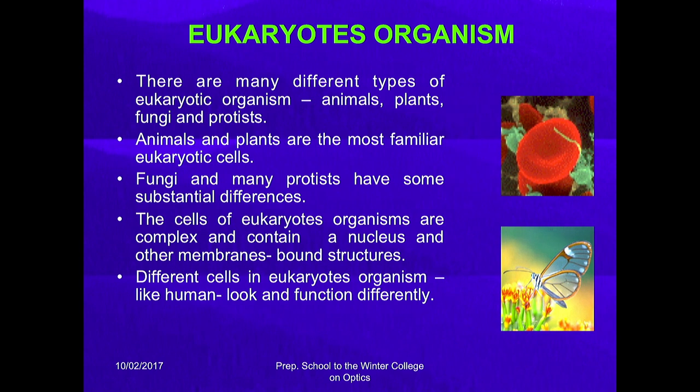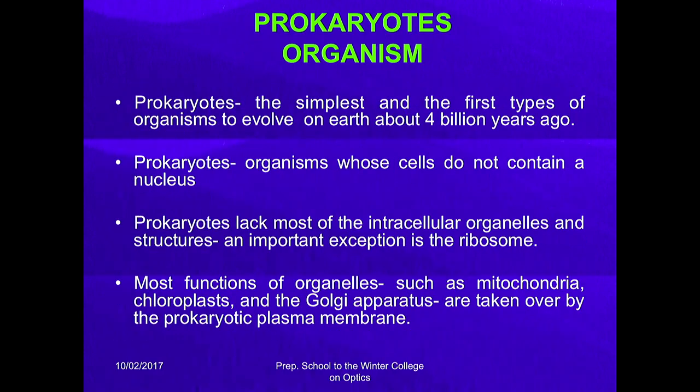There are different kinds of eukaryote organisms: animals, plants, fungi, and protists. Animal and plants are the most familiar eukaryote cells, and fungi and protists have many substantial differences. The cells of eukaryote organisms are complex and contain a nucleus and other membrane-bounded structures. Different cells in a eukaryote organism like humans look and function differently — cells from nerve, red blood cell, and epithelial cell all work and look differently.